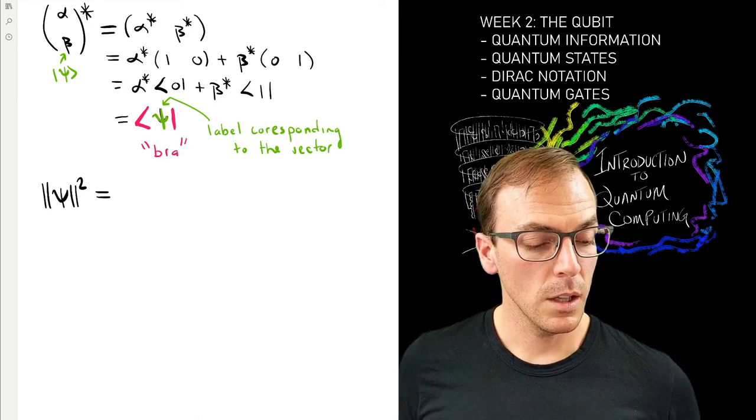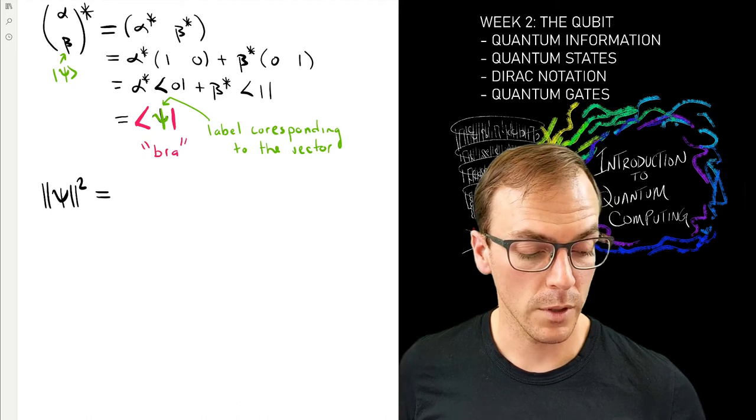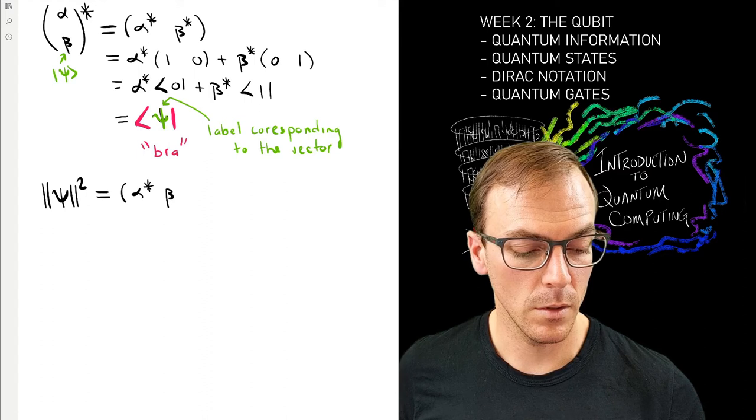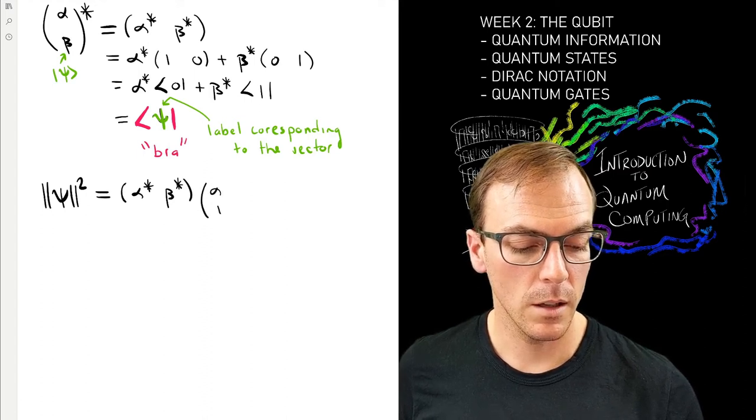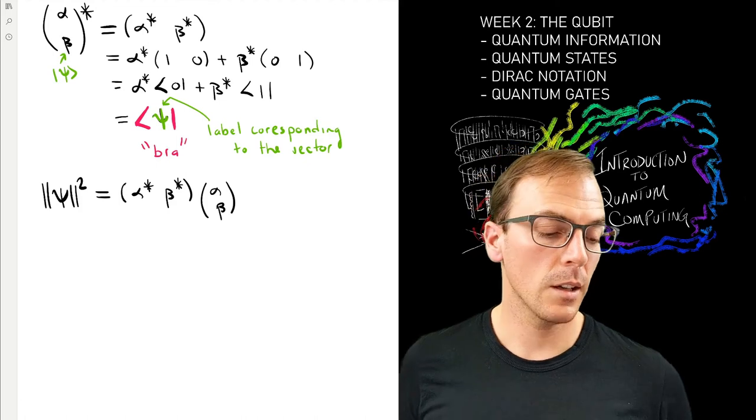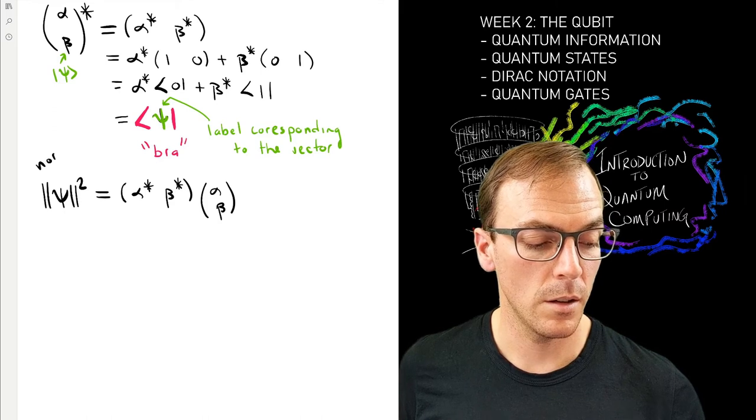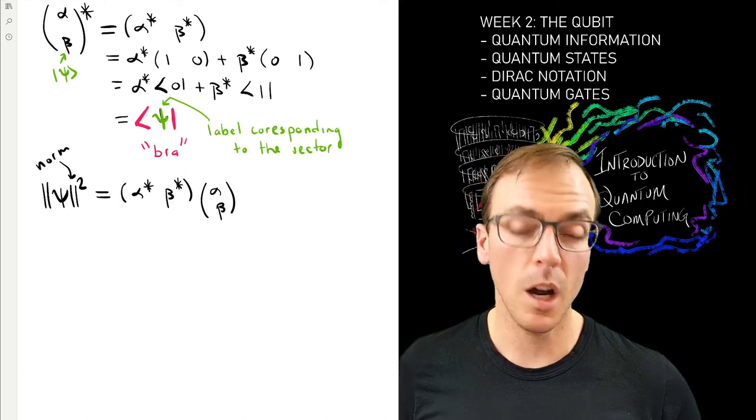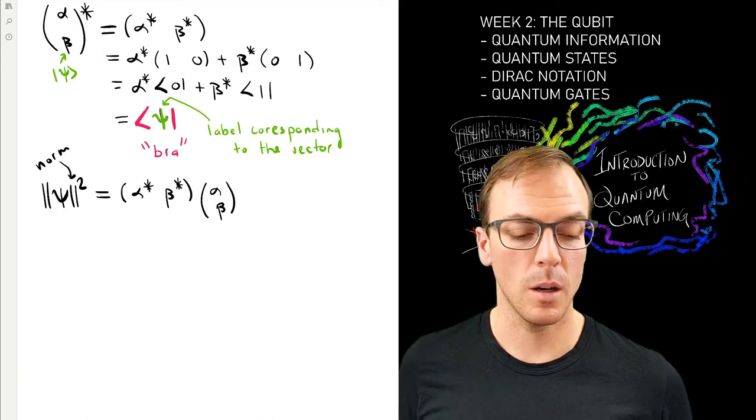So let me give you an example of how we can do a calculation that is natural in linear algebra but with Dirac notation. In usual everyday linear algebra, I would calculate the norm of a vector by taking one copy of the vector complex conjugate transpose times the original vector.